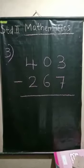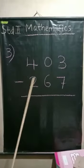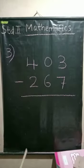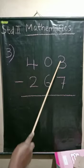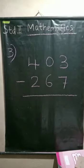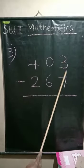See the third question: 403 minus 267. Same process - see the unit place digits. Take the ones place digits, 3 and 7.